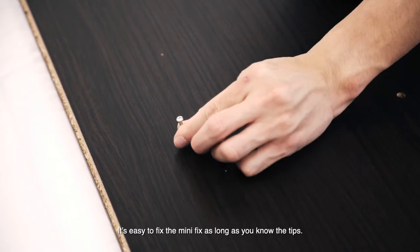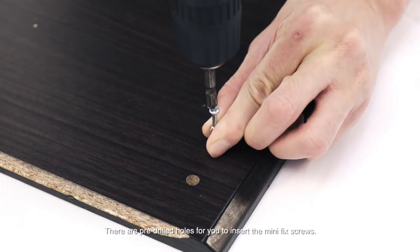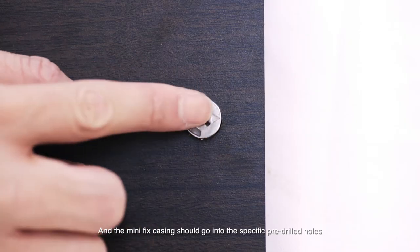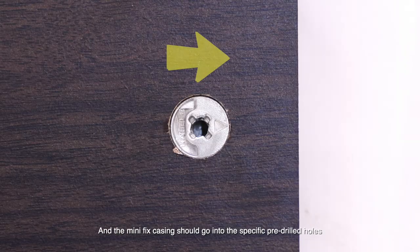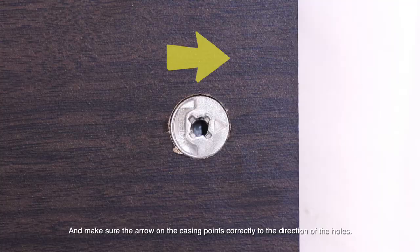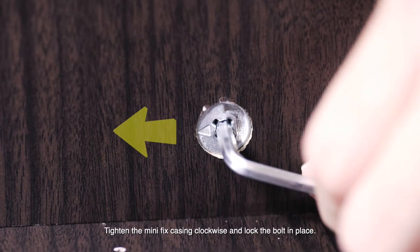It's easy to fix the Minifix as long as you know the tips. As you will see, there are pre-drilled holes for you to insert the Minifix screws. The Minifix casing should go into the specific pre-drilled holes, and make sure the arrow on the casing points correctly to the direction of the holes. Tighten the Minifix casing clockwise and lock the bolt in place.